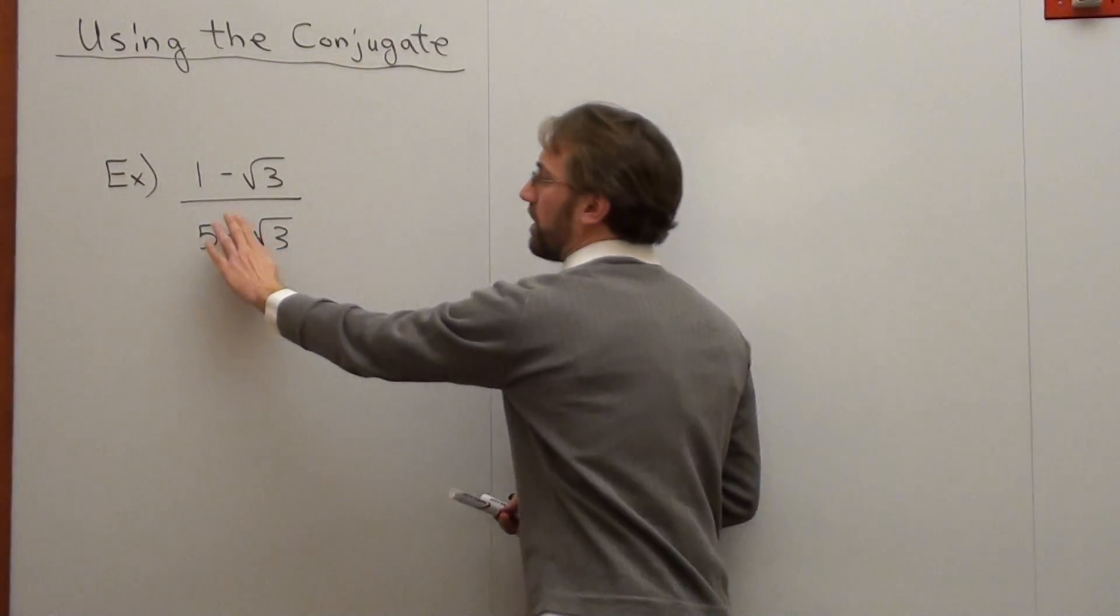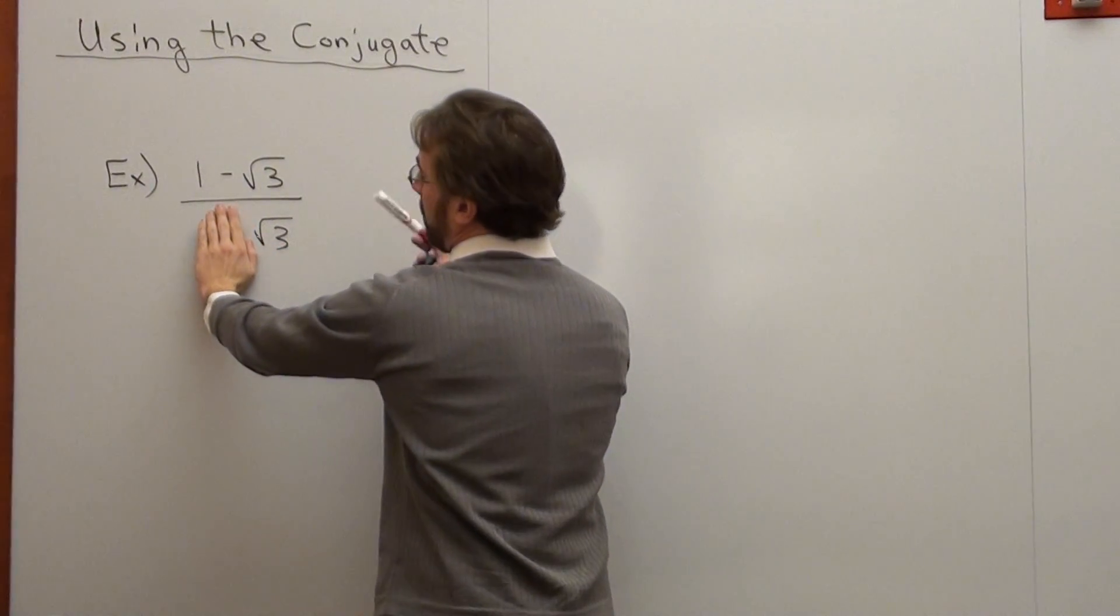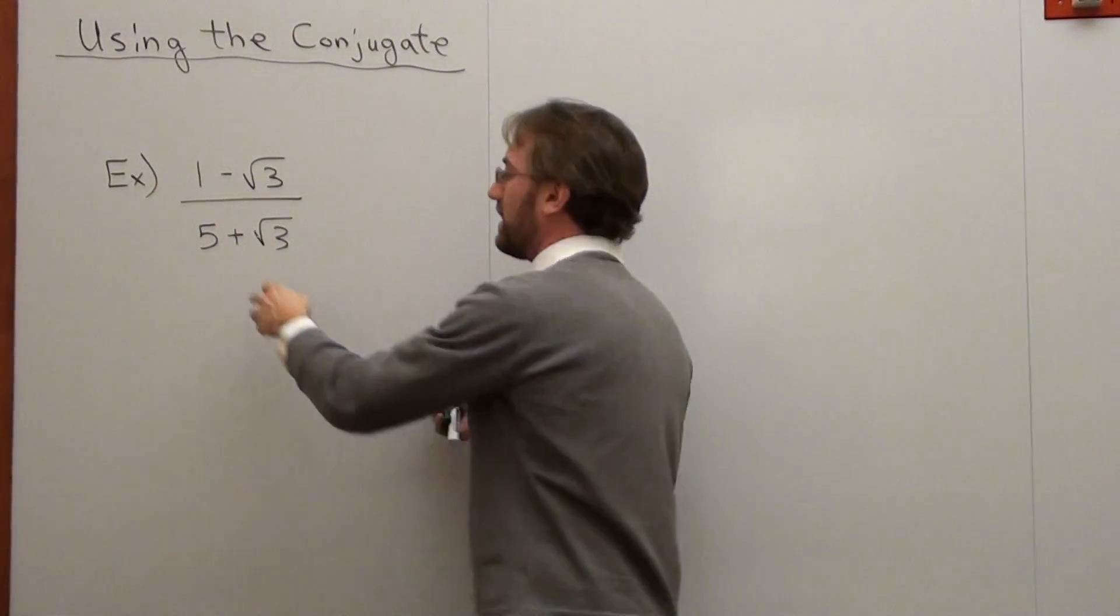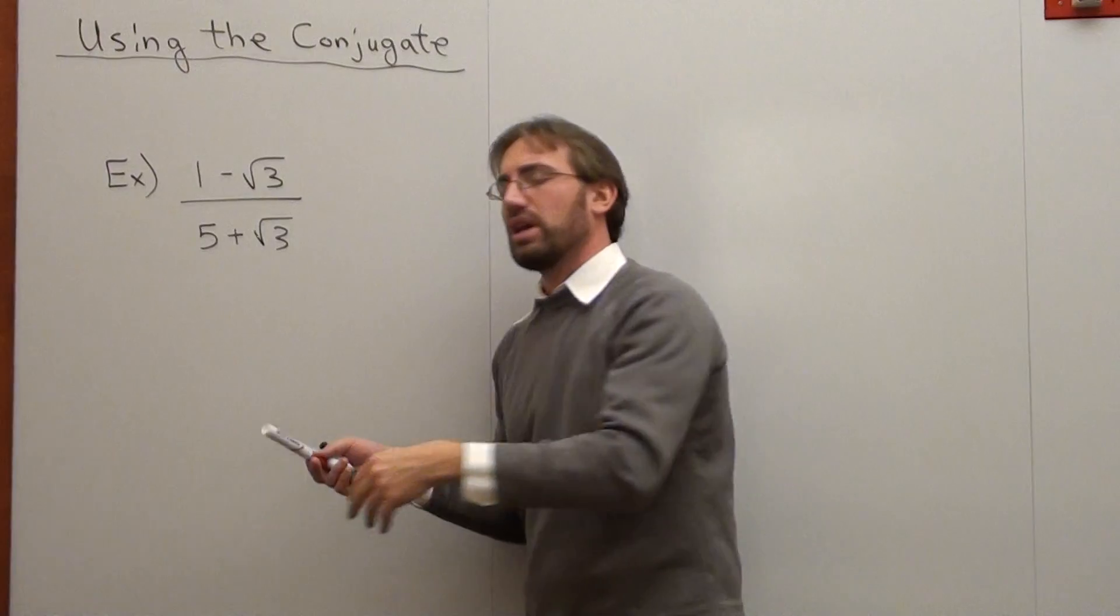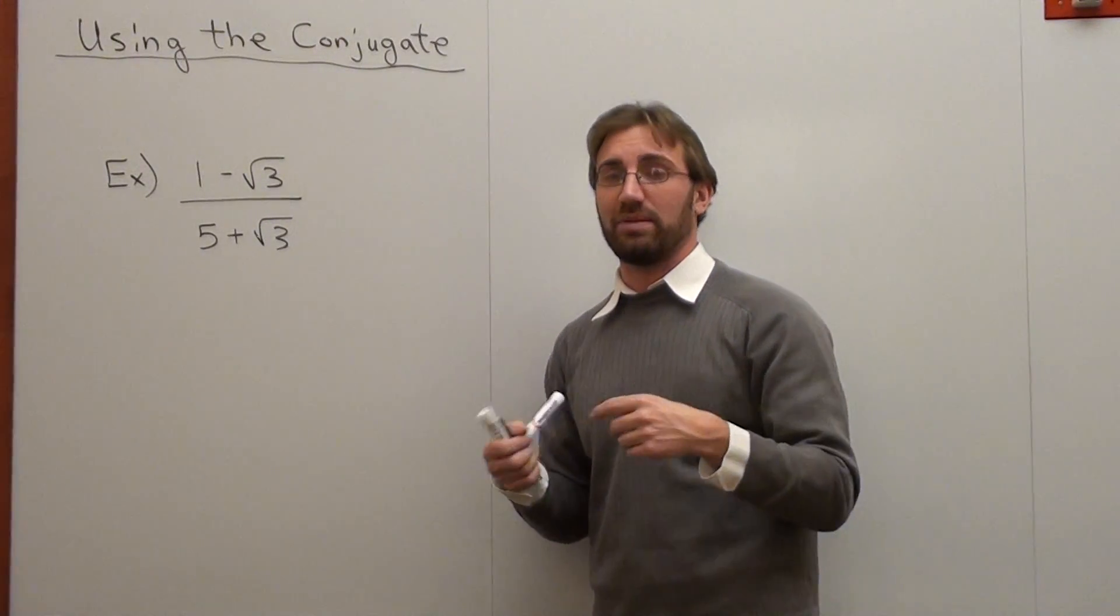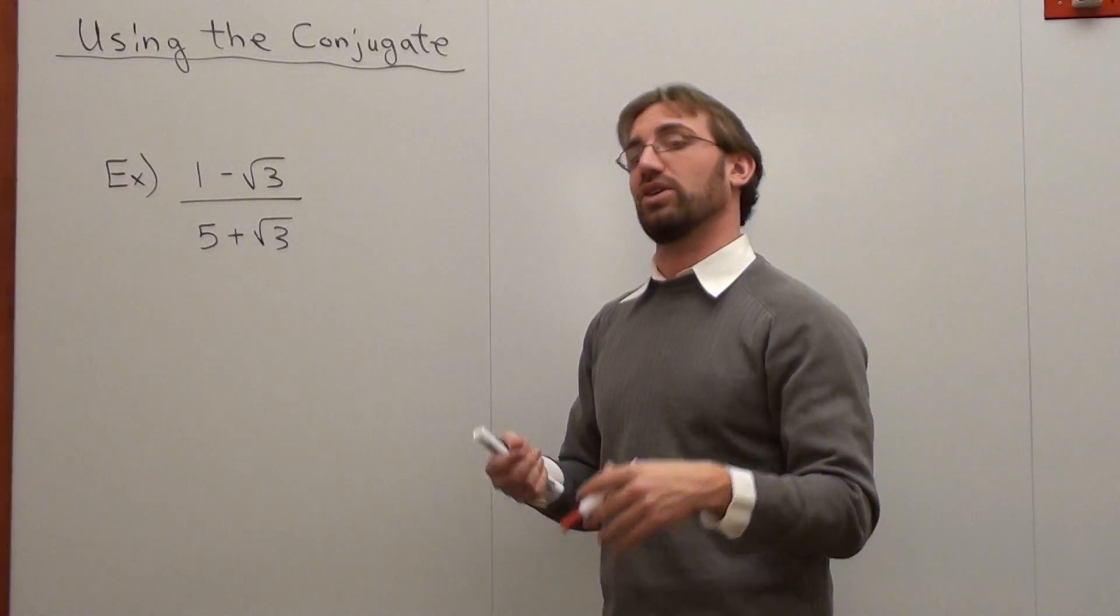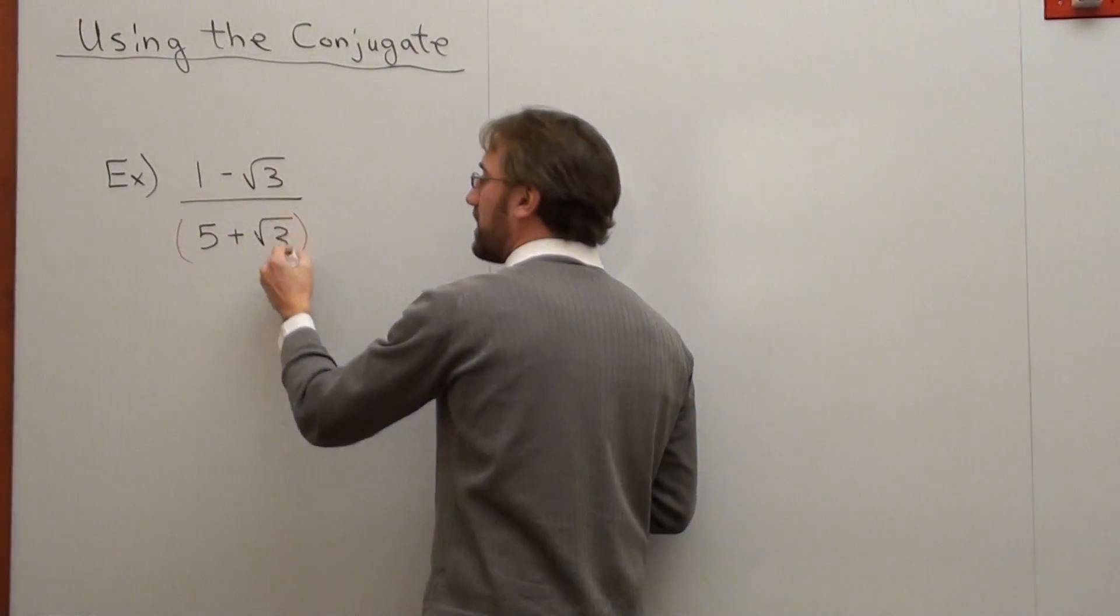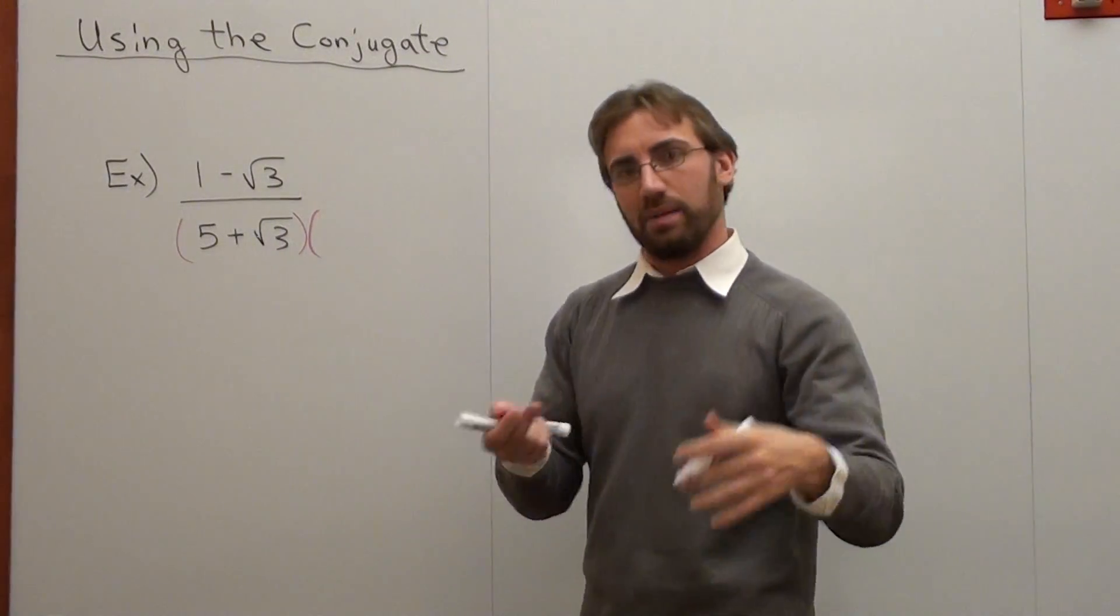Now, if it were just like root 3, I would just multiply by the root 3 on both the top and the bottom, the denominator and the numerator. It would be fine. But it's got two terms. Now, in order to satisfy the condition of getting rid of it, of simplifying my denominator, what I do is I multiply it by something called the conjugate. The conjugate is basically whatever the denominator is, except its opposite sign.